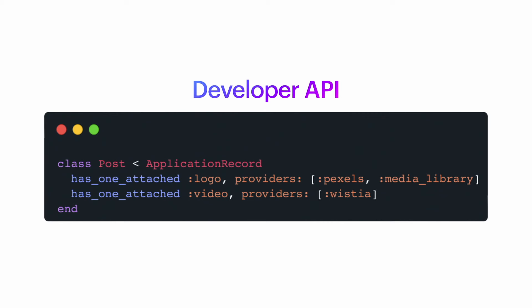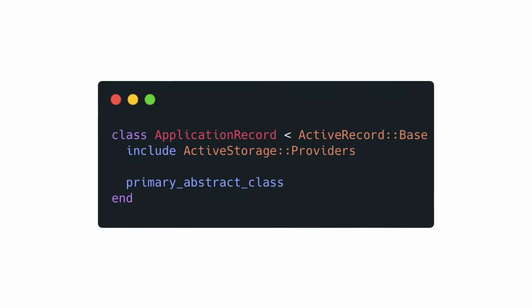A provider, by definition, is something that makes a resource available for use. In this context, the provider is responsible for managing how files are uploaded, stored, and retrieved from different services. For example, we can make Wistia a provider and handle how the backend processes the string submissions when a video is uploaded. The developer API looks like has_one_attached with a providers keyword argument that accepts an array of symbols. The logo field has two possible providers — Pexels and media library — while the video field is configured to use the Wistia provider. This allows developers to easily switch between different sources based on different file sources. We introduce a new concern called Active Storage Providers, an Active Support concern included in Application Record, allowing all models in the app to use this functionality seamlessly.